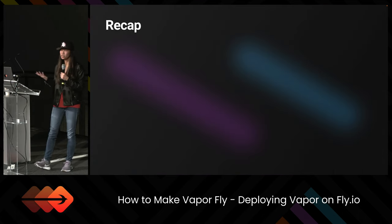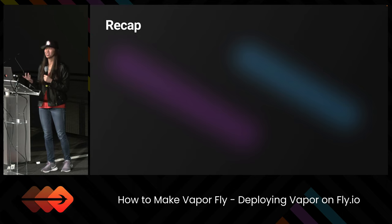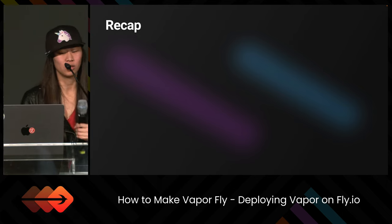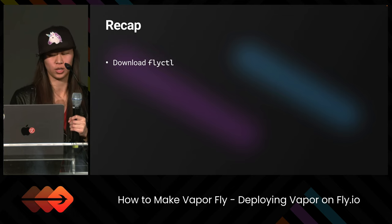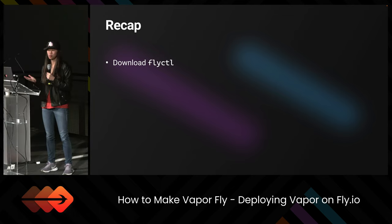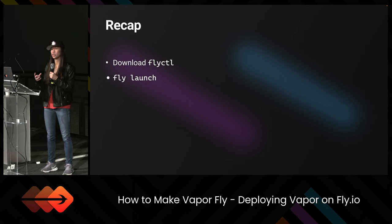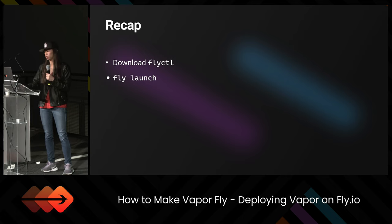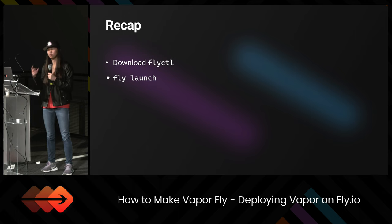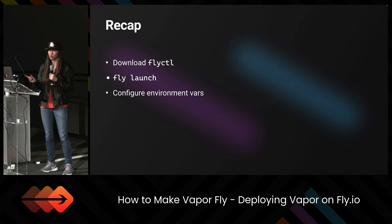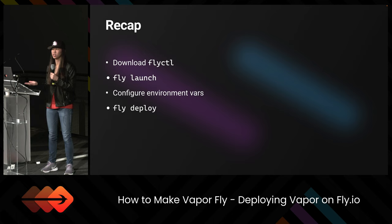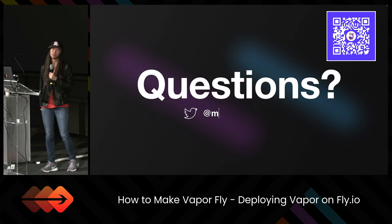Let's recap, because all we did was write a bunch of terminal commands. First, we had to download flyctl using Homebrew. Then we typed 'fly launch' to create our application on Fly's platform. We had to configure the environment variables and type everything correctly — this is the most important step. Once we do that, we just type 'fly deploy', and everything is up and running using the Dockerfile that's created.